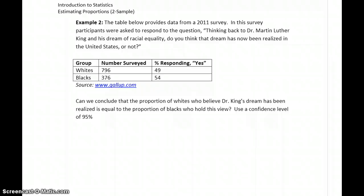In example two, we have data from a survey about people who were asked to respond to the question, thinking back to Dr. King's dream of racial equality, do you think that dream has now been realized? In this case, the groups are being broken up into whites who responded and blacks who responded, giving us two different proportions to consider. We'll let whites be sample one and blacks be sample two.